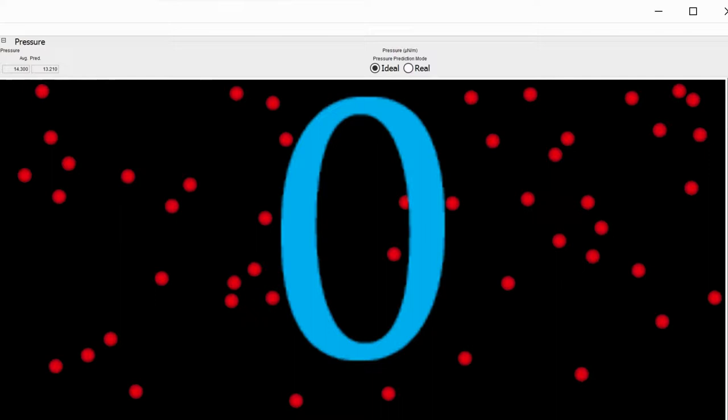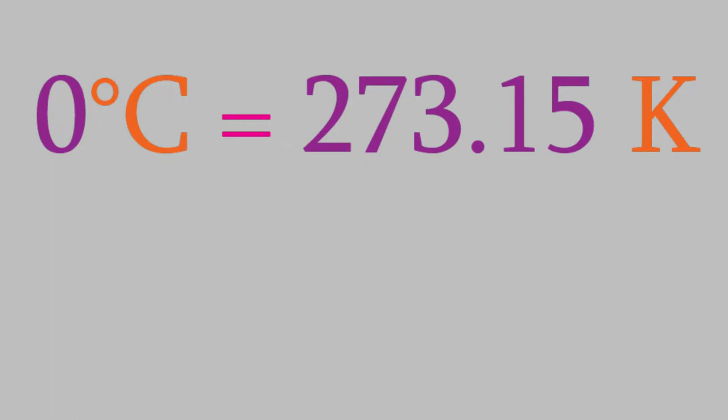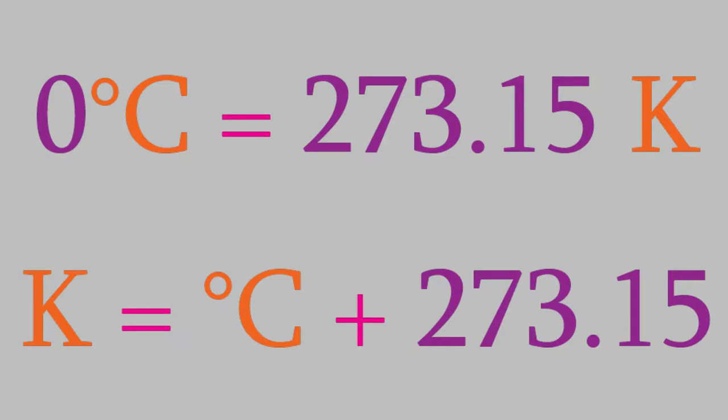It's actually very easy to convert temperatures from Celsius to Kelvin and back. Zero degrees Celsius is 273.15 Kelvin. That means that in order to convert a Celsius temperature to Kelvin, we just add 273.15.